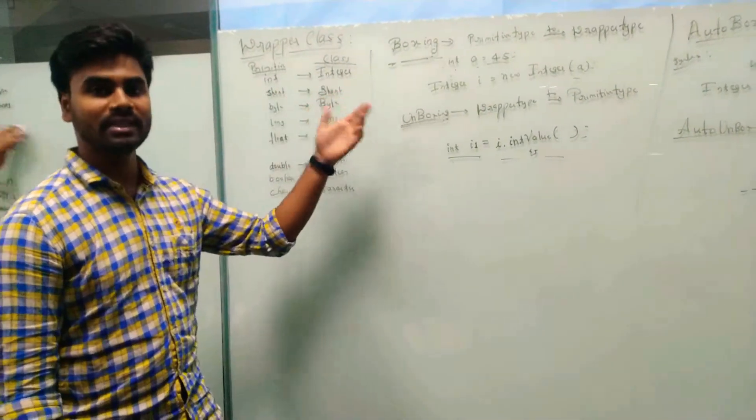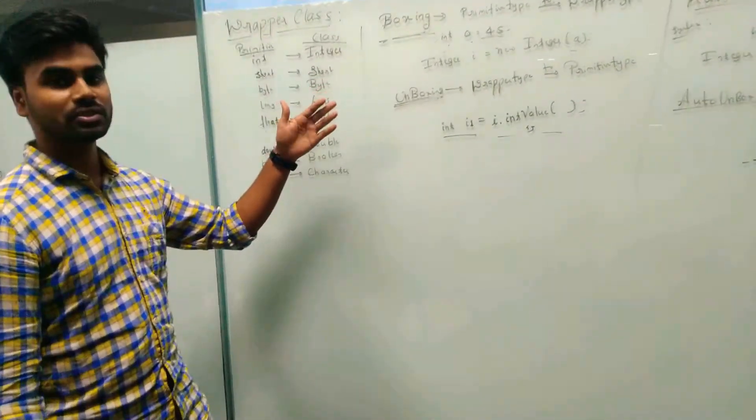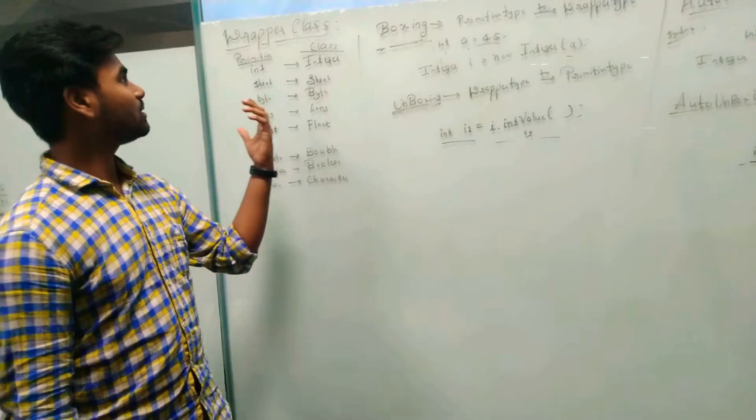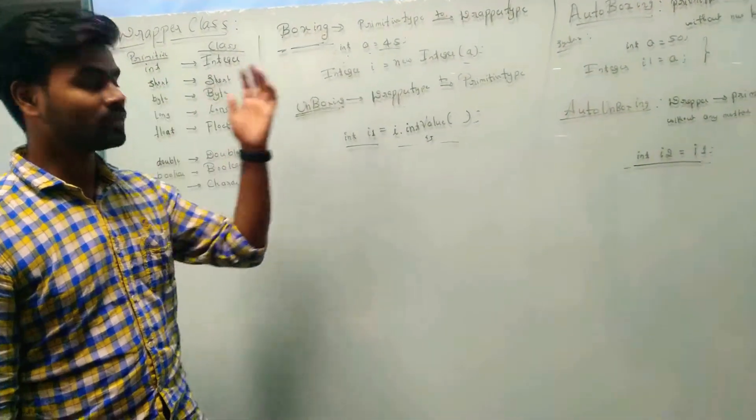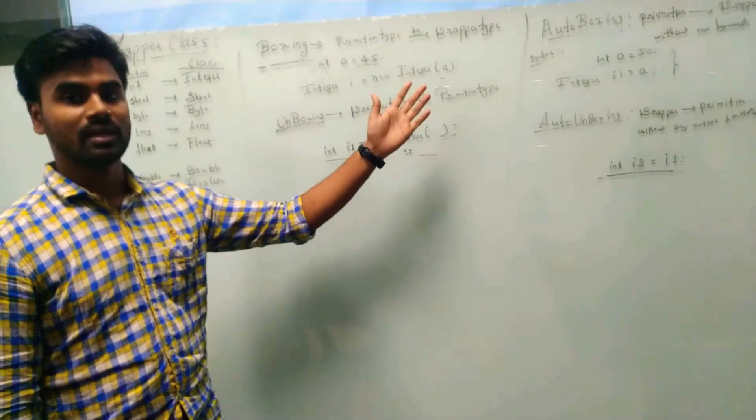For integer, it converts to Integer class. For short, it converts to Short class. In wrapper class, it is divided into boxing and unboxing. In boxing, it converts the primitive to wrapper classes.